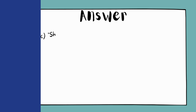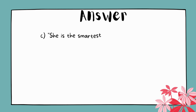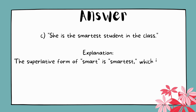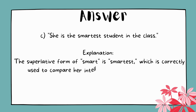The answer is C. She is the smartest student in the class. Explanation: The superlative form of 'smart' is 'smartest,' which is correctly used to compare her intelligence to others in the class.